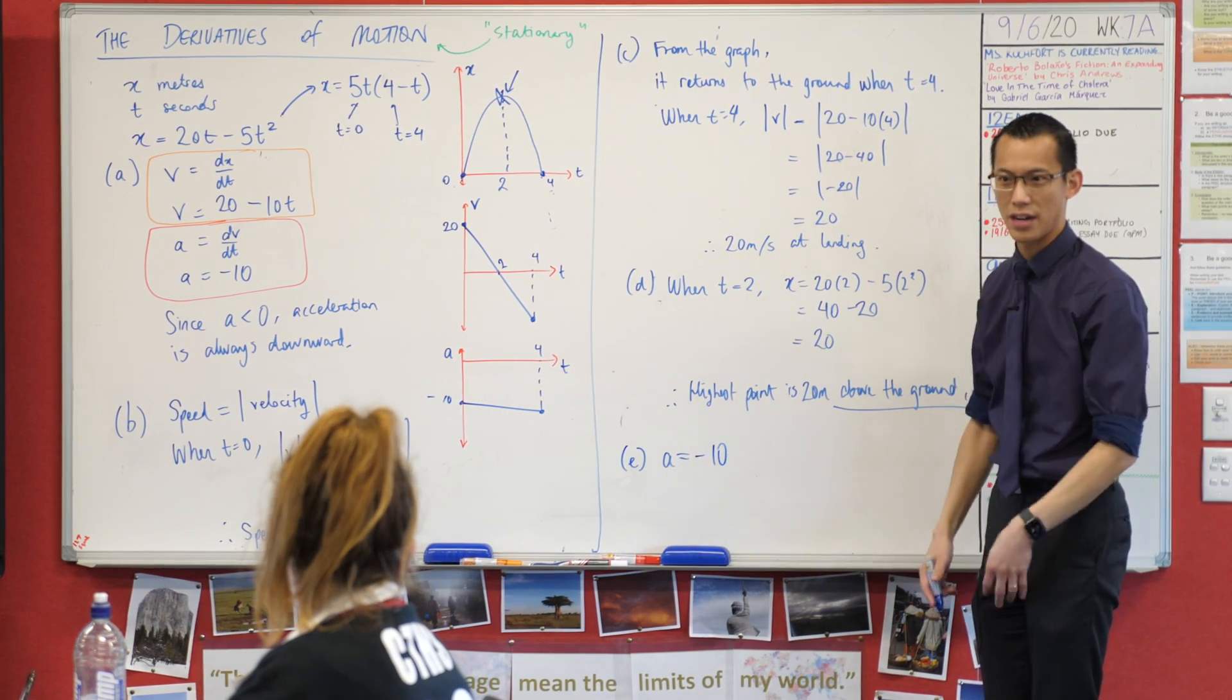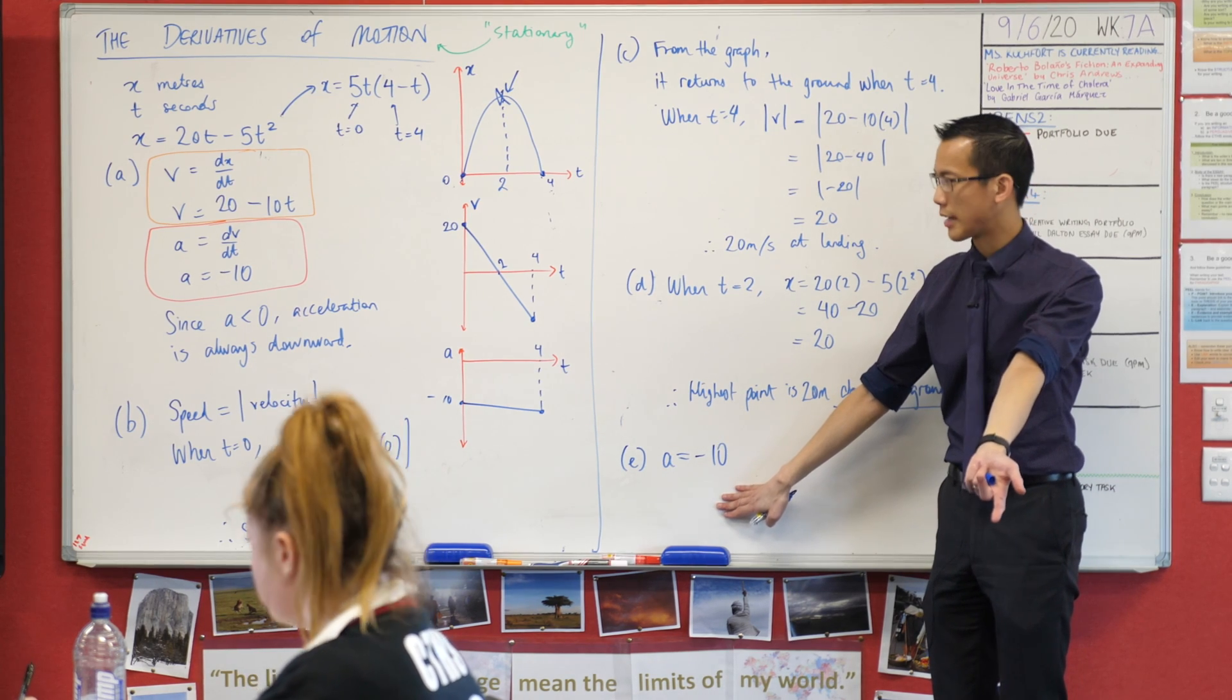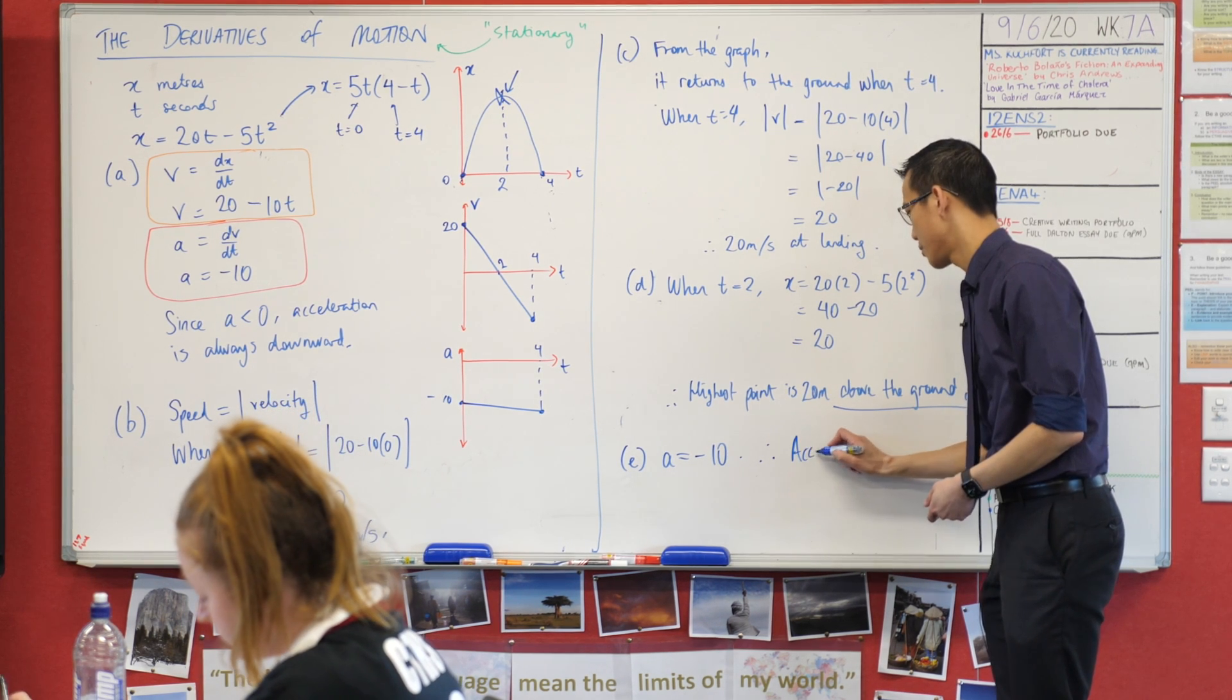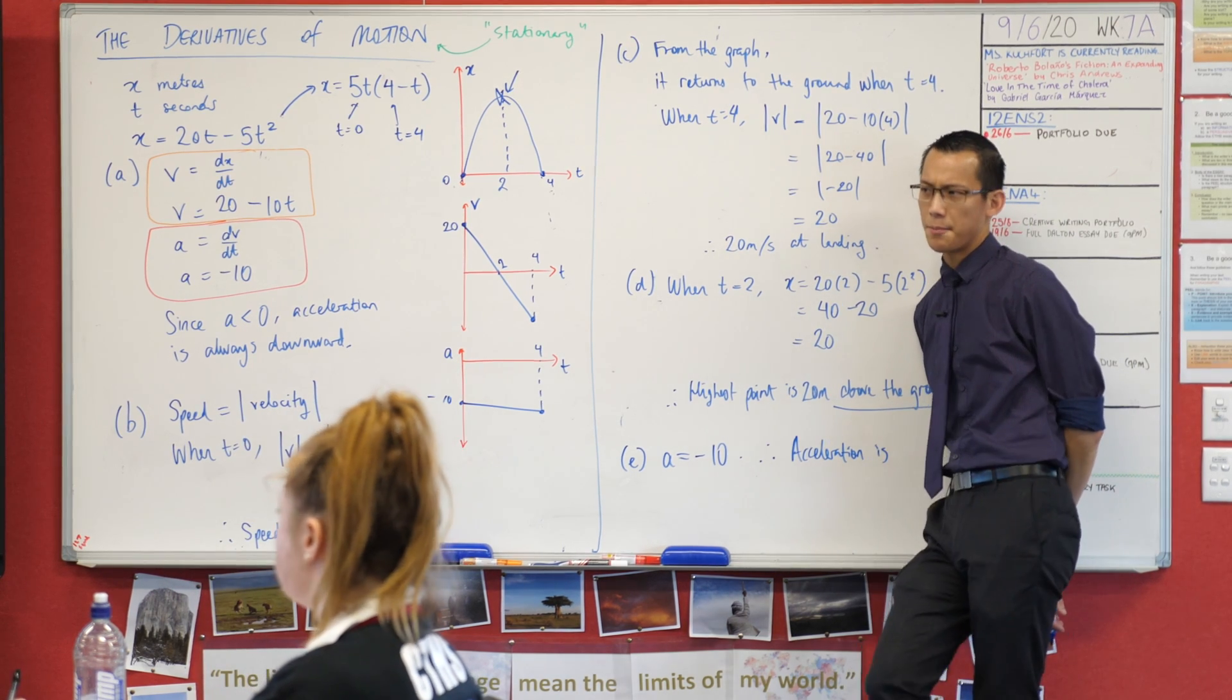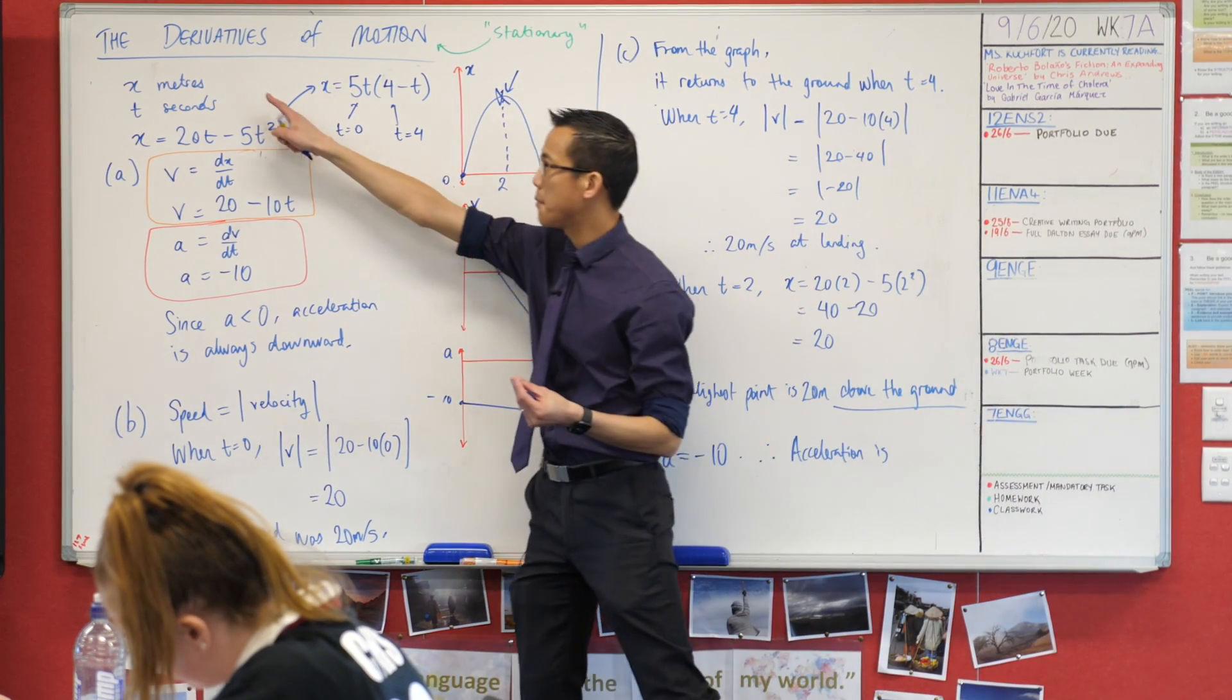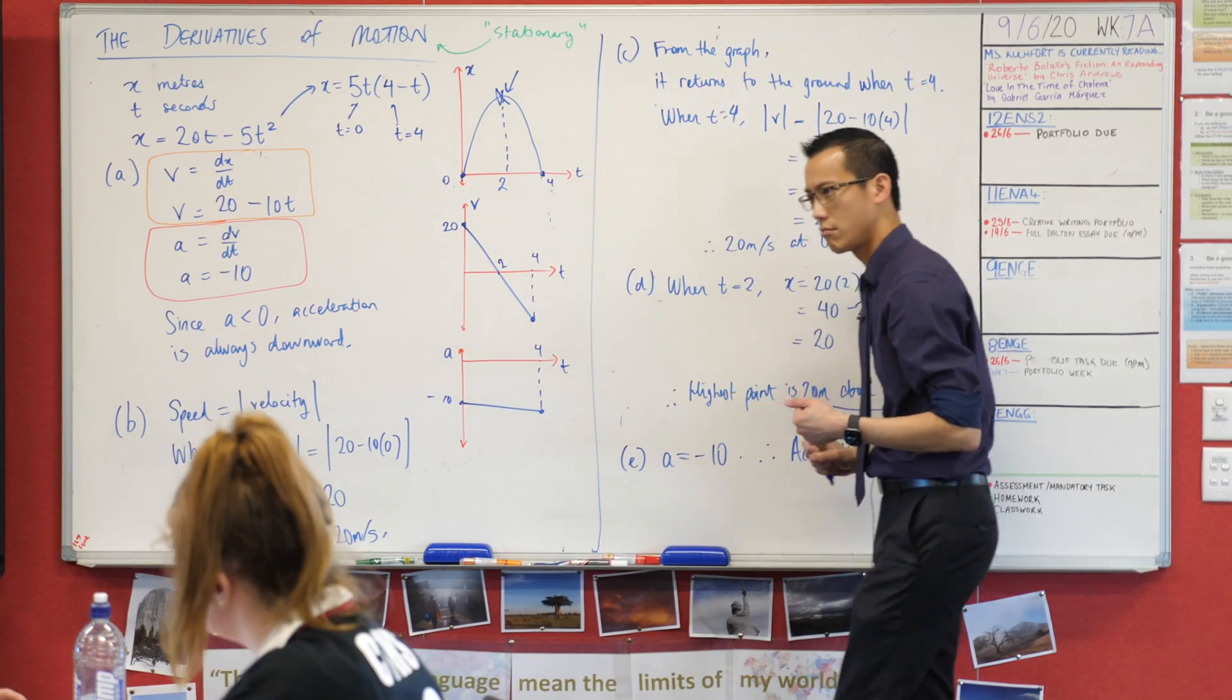But if I had some other acceleration equation, I'd say substitute t equals 2 into there, and you get some value. Now, what does this mean? I haven't actually answered the question. I would say, therefore, acceleration is... Now, pause. Displacement units are meters. Velocity units are meters per second. What are acceleration units?